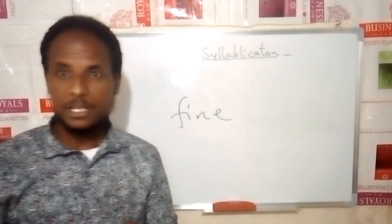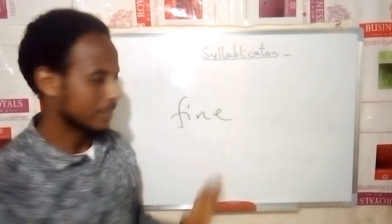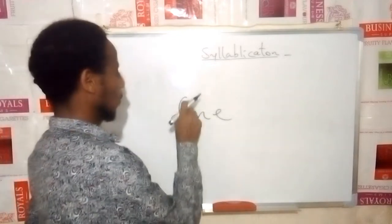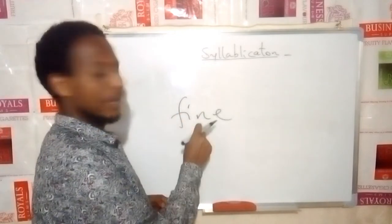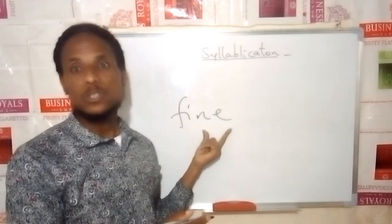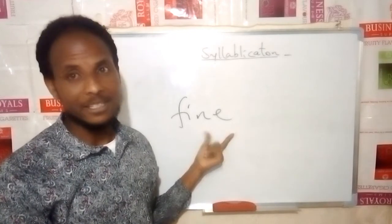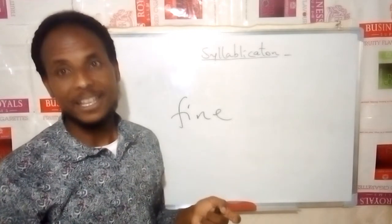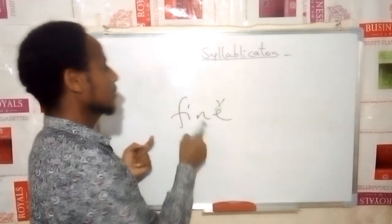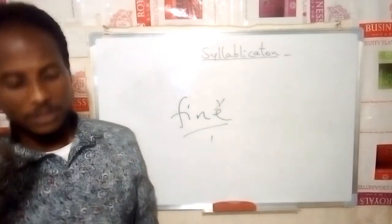Exception one: if there is a letter E at the end of the word, it is silent. Let's count the vowel sounds in the word 'fine': I and E. However, even though it has two vowel letters, I and E, the letter E is silent. So we count only one vowel sound, I, making it monosyllabic.